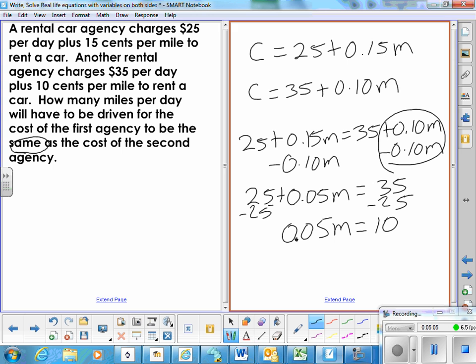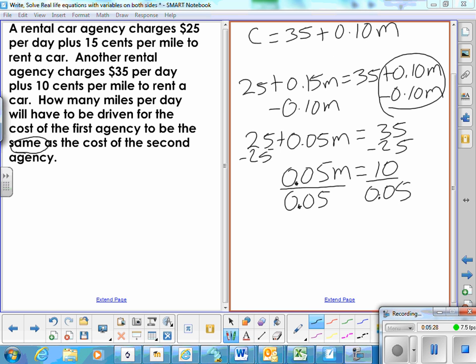So at some point, if I drive enough miles, that will make up that $10 difference. You can just divide. Since that is .05 times M, we can just divide by .05. You can just do that on a calculator. And that says M equals 200.